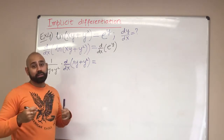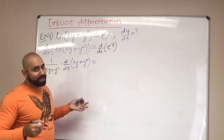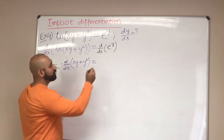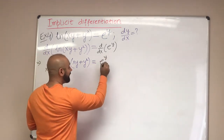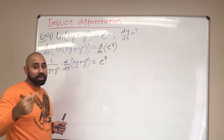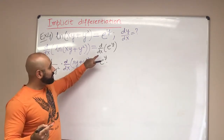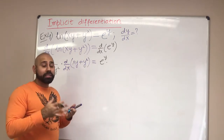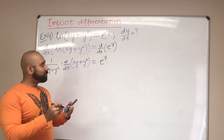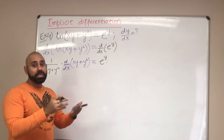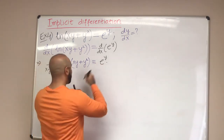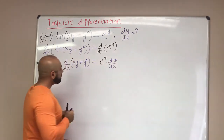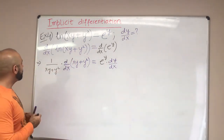On the right-hand side, we can already evaluate the derivative. The derivative of an exponential function is the exponential function itself, so it's e^y. But since y is a function of x and we're differentiating with respect to x, we must multiply by the derivative of the exponent — that is, multiply by dy/dx.